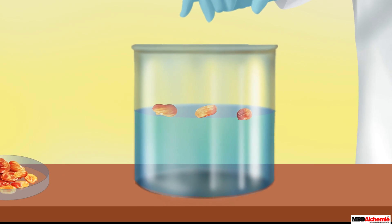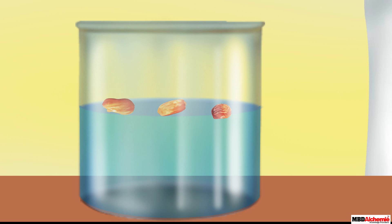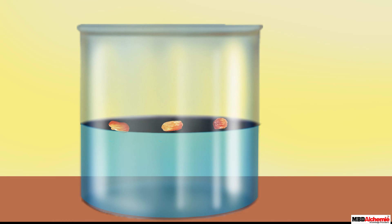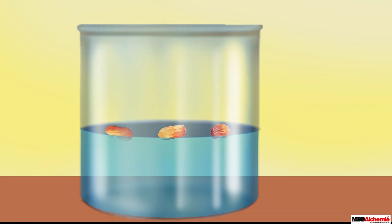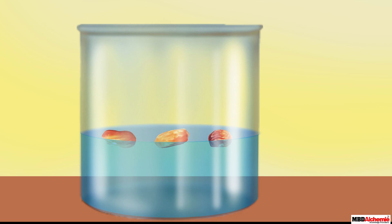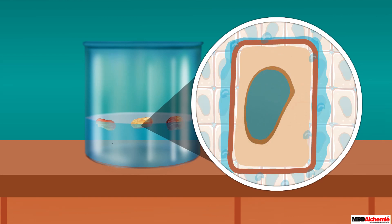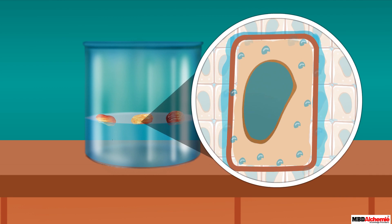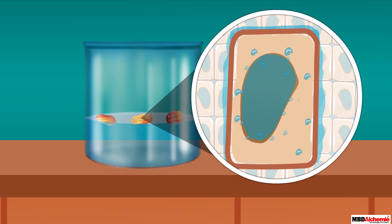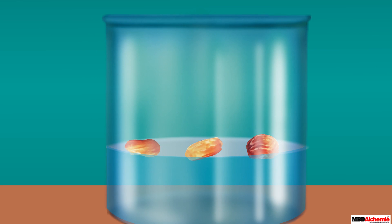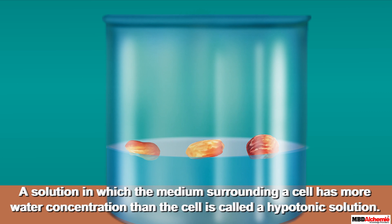You can see that the water concentration inside the raisin is lower compared to that in the container. As a result, osmosis happens and water from the container moves into the raisins, causing them to swell up. This process of osmosis actually takes place at the cellular level — water moves inside each of the cells of the raisins through osmosis. The water gets stored in the vacuole of each cell, causing the vacuole to increase in size, which makes the cell swell up and increase in size.